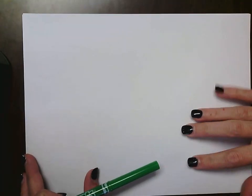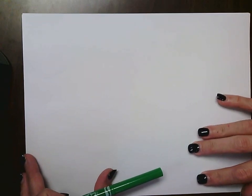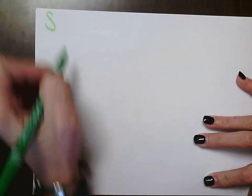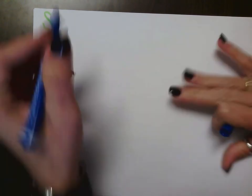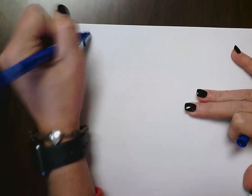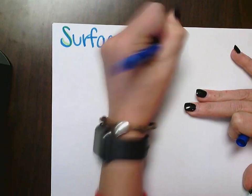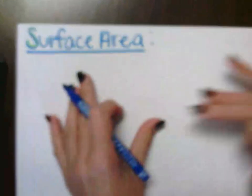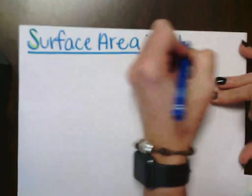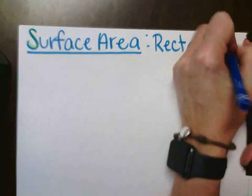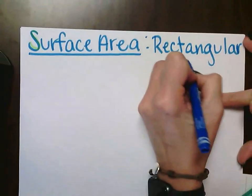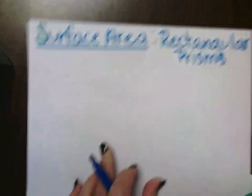Welcome to our quick video on surface area. We're going to cover the total surface area and the lateral surface area of a rectangular prism. On my notes I'm going to write surface area as the main topic, but we're really focusing on rectangular prisms.